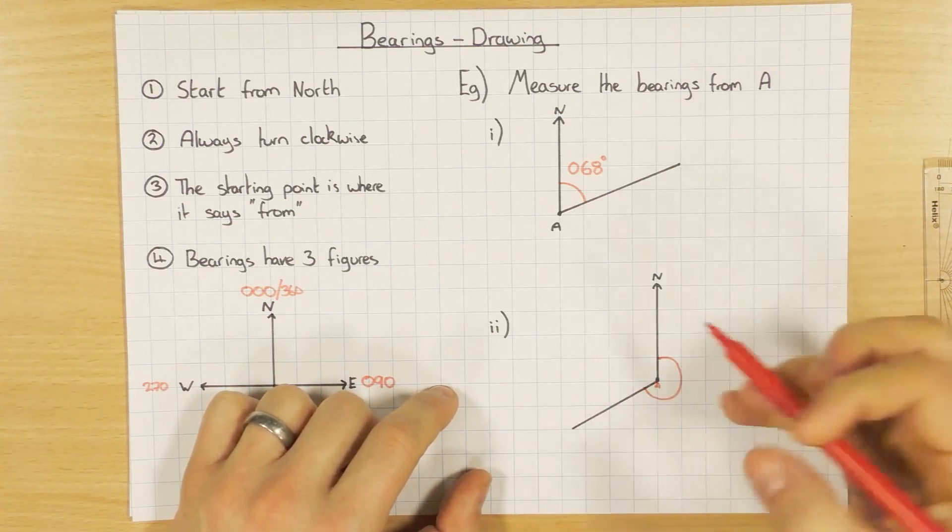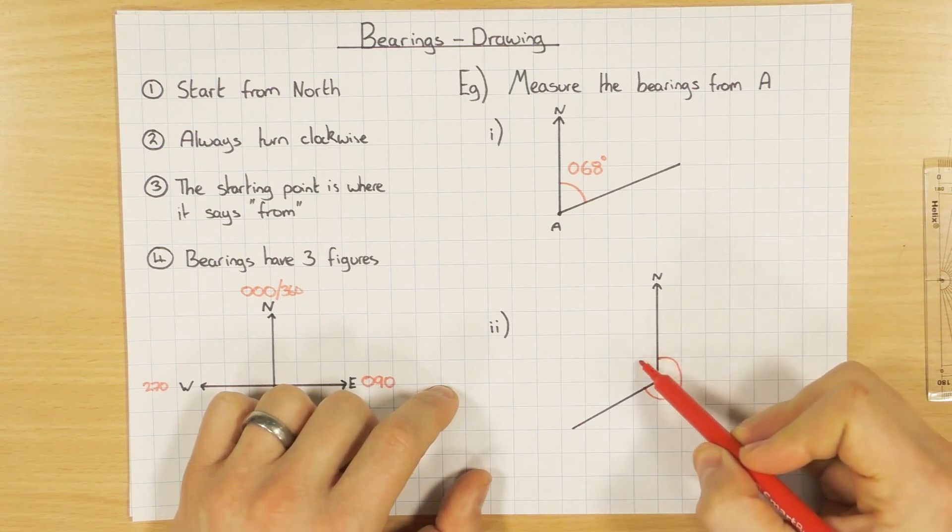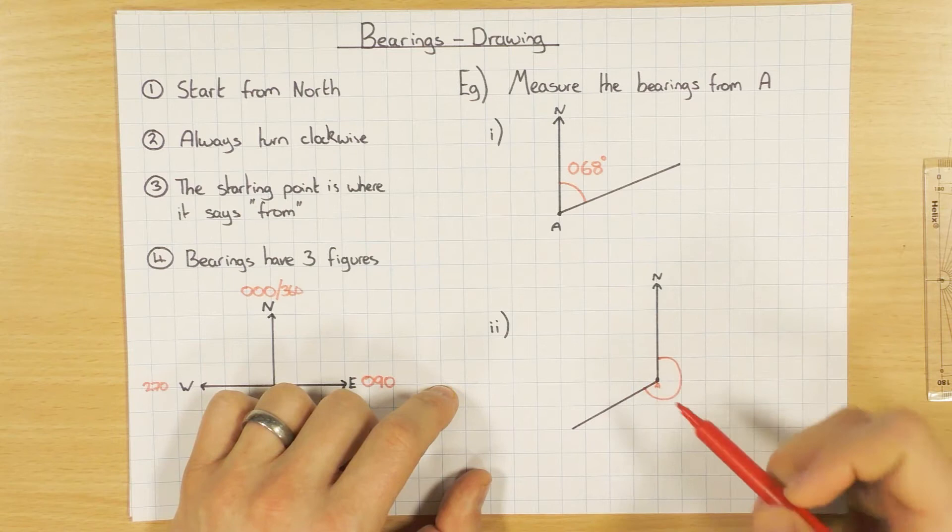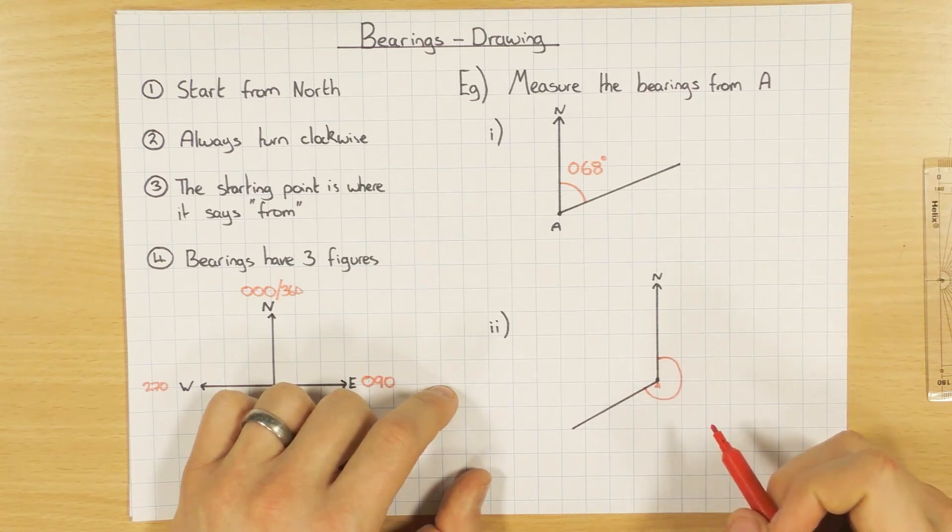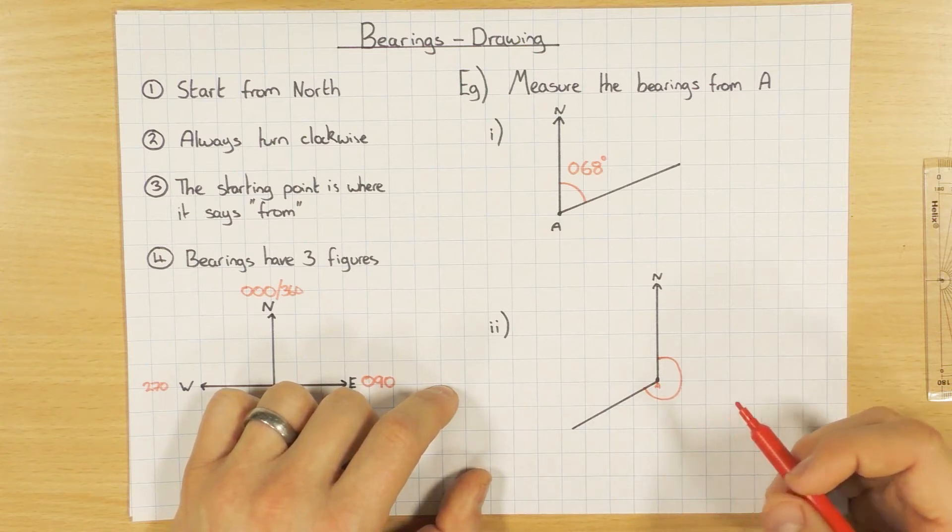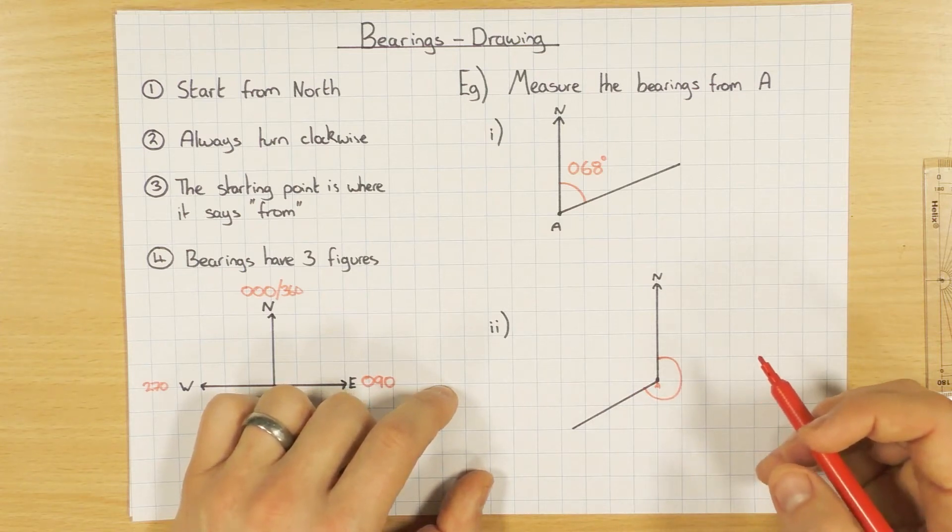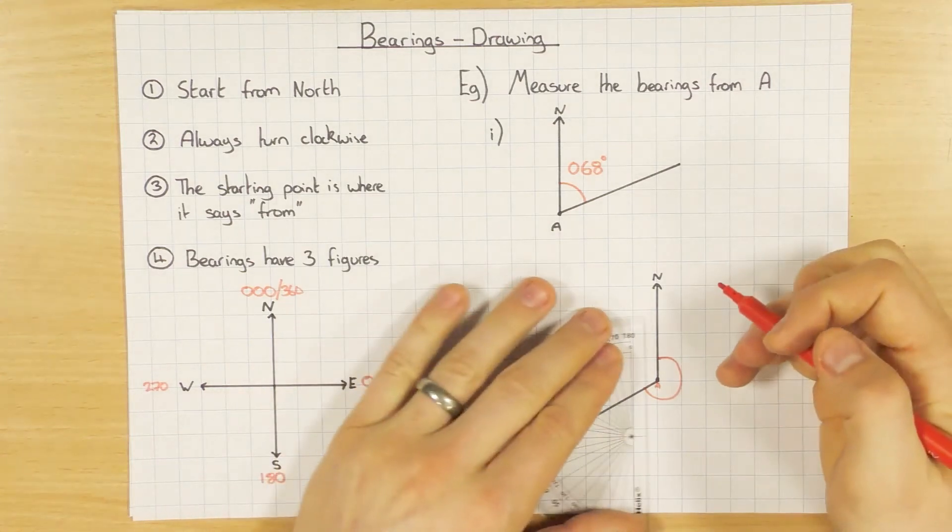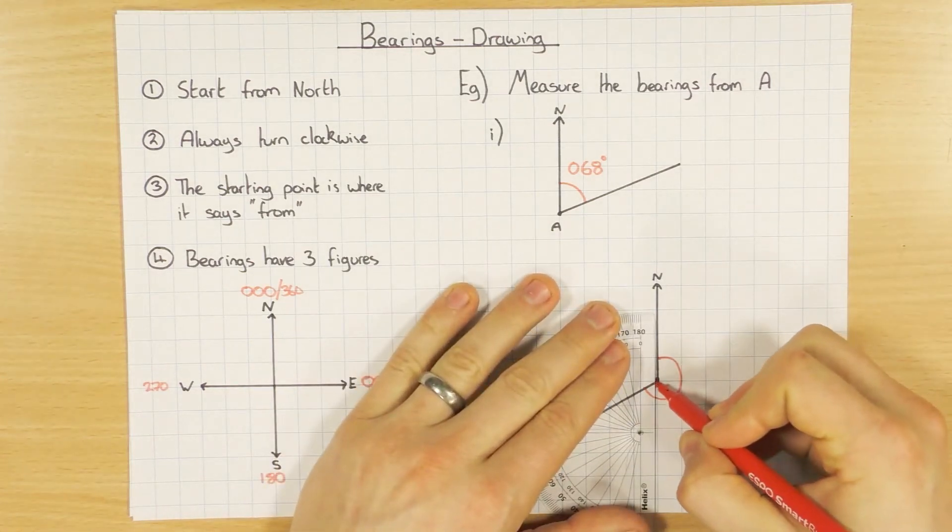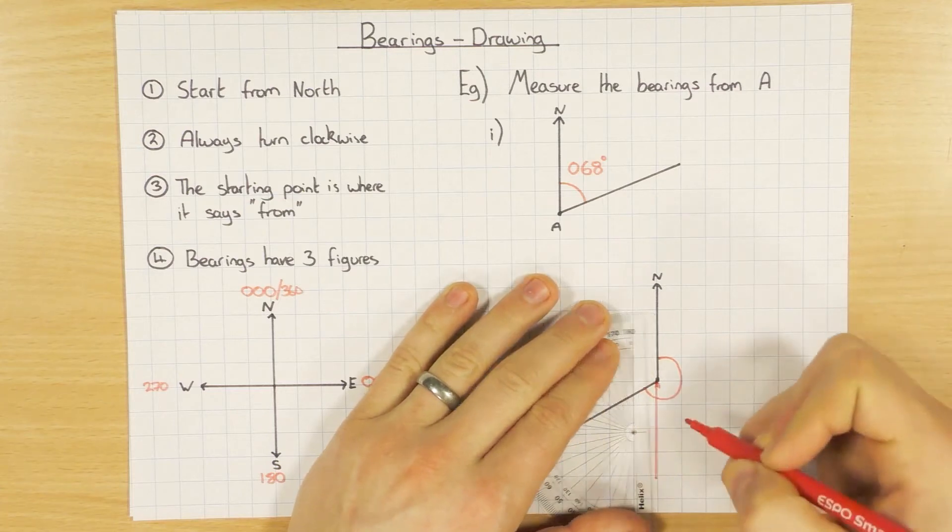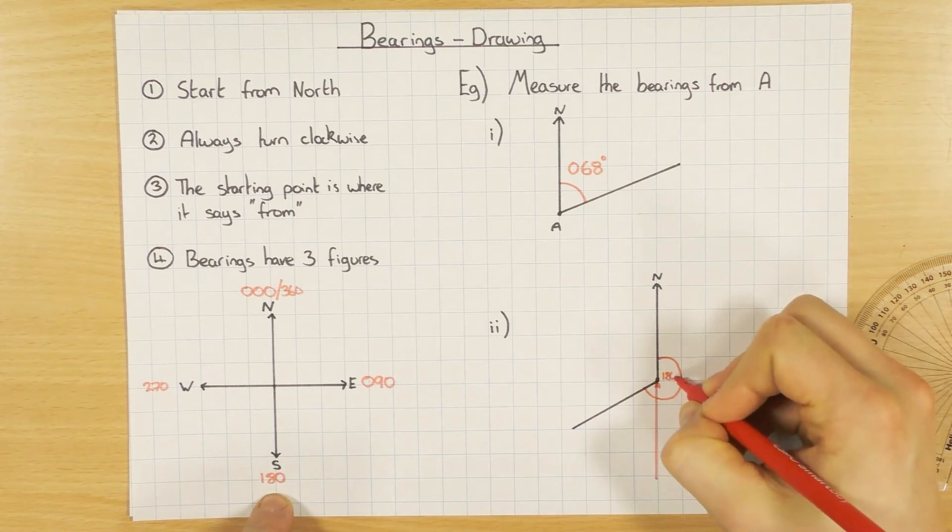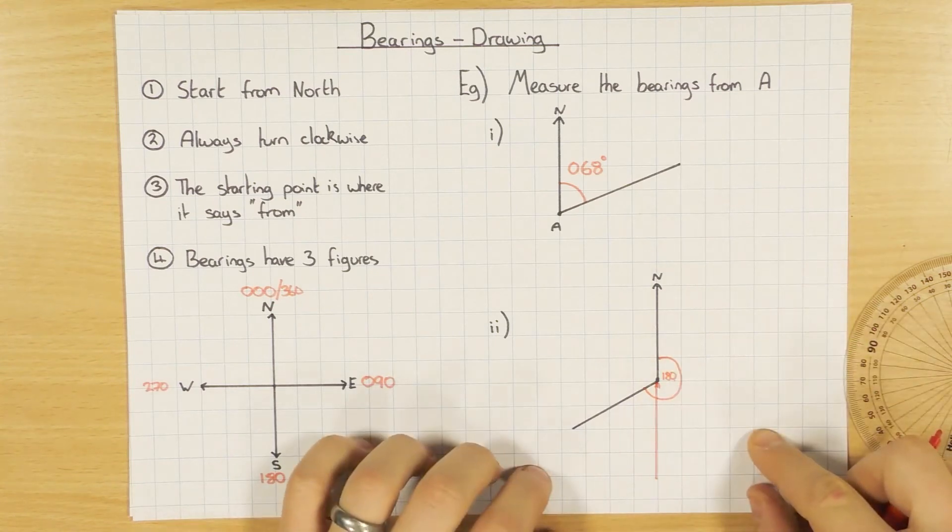Now there's two ways you can do this. You can use your protractor to work out the missing angle here, and then take that away from 360. Absolutely fine to do that. But lots of people make mistakes when doing subtraction. So the other way, and I think it's probably the easier way, but it's entirely up to you, is to draw a little south line on here, like so. Because we know that south is 180 degrees. So I know from a straight line going straight down, that's 180 degrees.